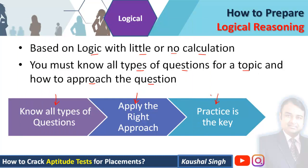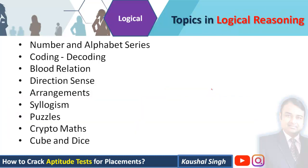The topics of logical reasoning include: number and alphabet series, coding-decoding, blood relations, direction sense, arrangements — which can be linear or circular — syllogisms, puzzles, cryptarithmetic questions, and questions on cube and dice.